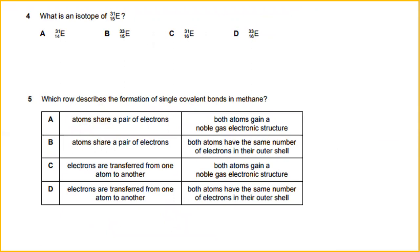What is an isotope of 31/15 A? The answer would be B. Which rule describes the formation of single covalent bonds in methane? Atoms share a pair of electrons. Both atoms gain a noble gas electronic structure.